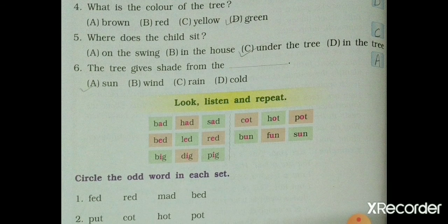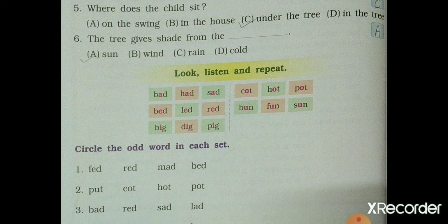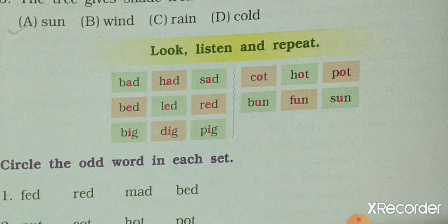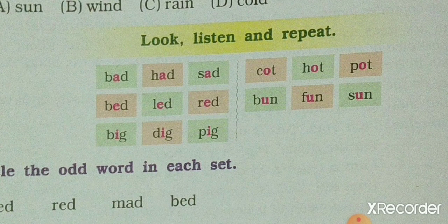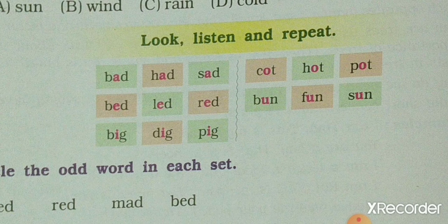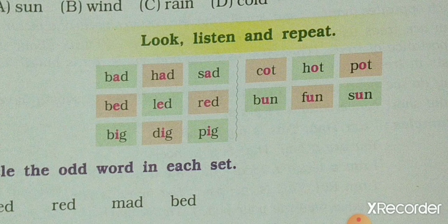Now children, look, listen and repeat. First of all, I read, then you also read with me. For example: B, I, G — big. In this way, I will first read all the words, and then you repeat after me to learn the reading.